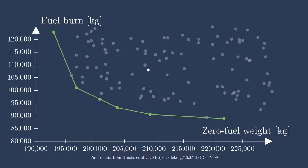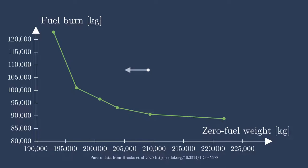Let's take a look at one design here, shown in white. If we try to move left by optimizing the zero fuel weight to be lower, we can improve on it based on what we see in the Pareto front. Additionally, we can also improve by moving down to minimize fuel burn even further. That means that that design is dominated by designs along the Pareto front.